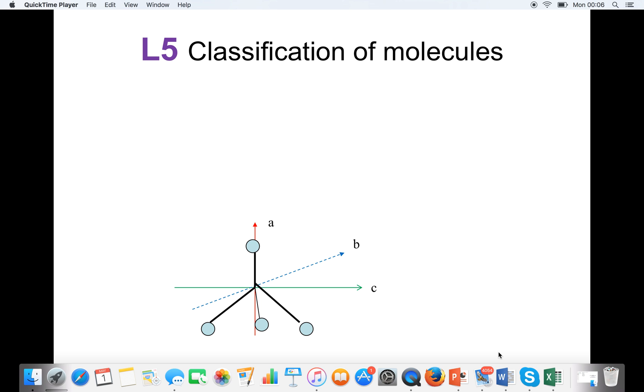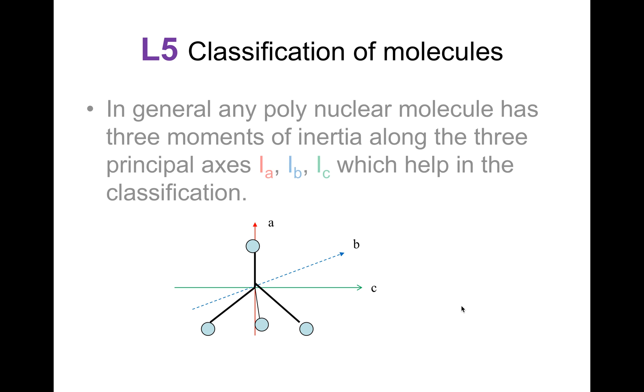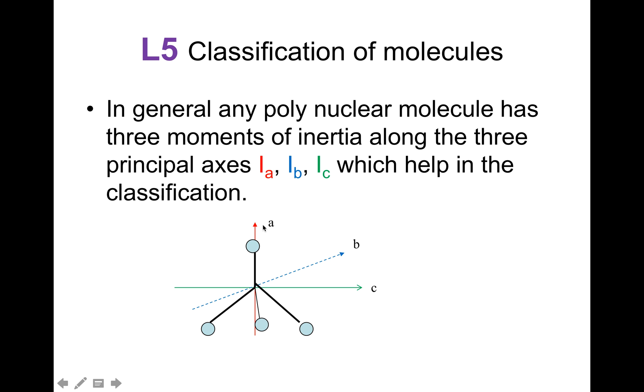Classification of molecules. In general, any polynuclear molecule has three moments of inertia along the three principal axes: Ia, Ib, and Ic, which help in the classification. Here is an example. There is Ia, there is Ib, and there is Ic in this molecule which has four atoms.